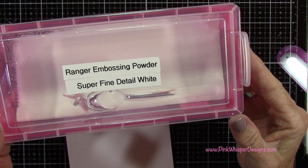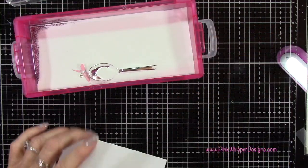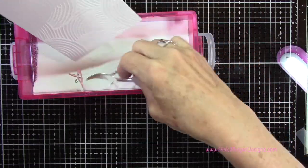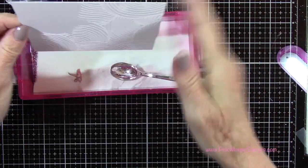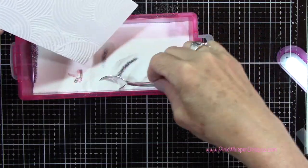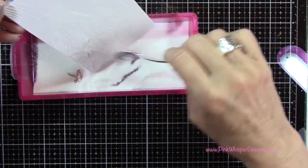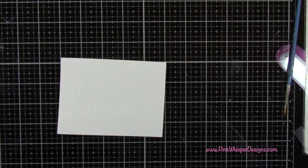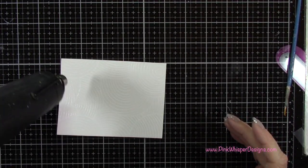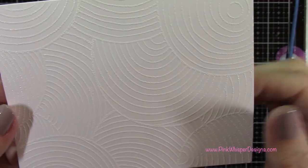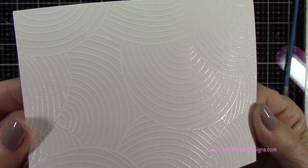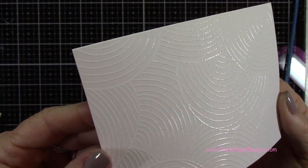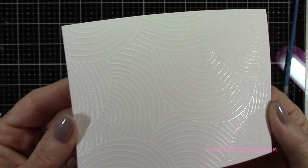So now I'm going to use my Ranger Embossing Powder. This is the super fine detail white. I'm going to sprinkle that on all over. And then you just want to tap away any excess. Now I'm using my heat tool. I'm going to heat set that. And you want to make sure that it looks shiny. If it's all shiny across the top you know that you completely embossed it. If you see any dull spots you do want to go back and give that a little bit more of a heat set.